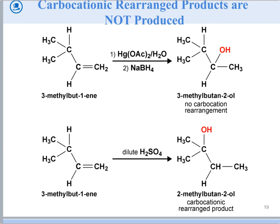There are no carbocations involved with oxymercuration. So in oxymercuration, you would never get rearrangements — whereas with dilute H2SO4 hydration reactions, you actually do get rearrangements. With mercury, there are no carbocation rearrangements whatsoever.